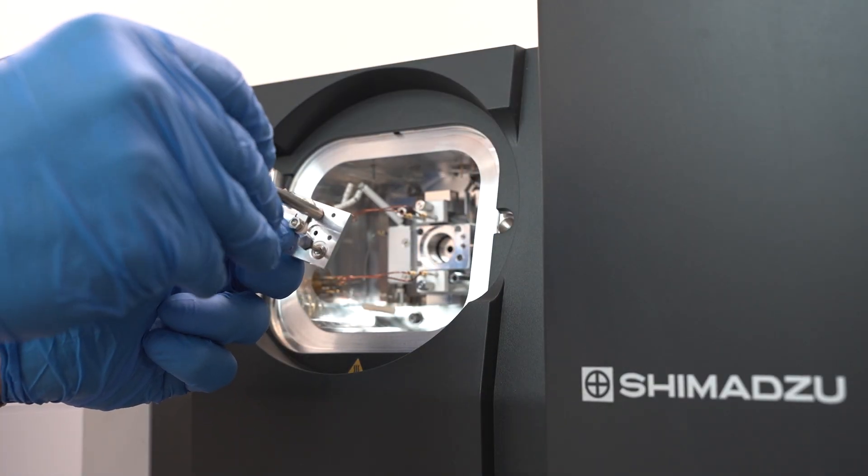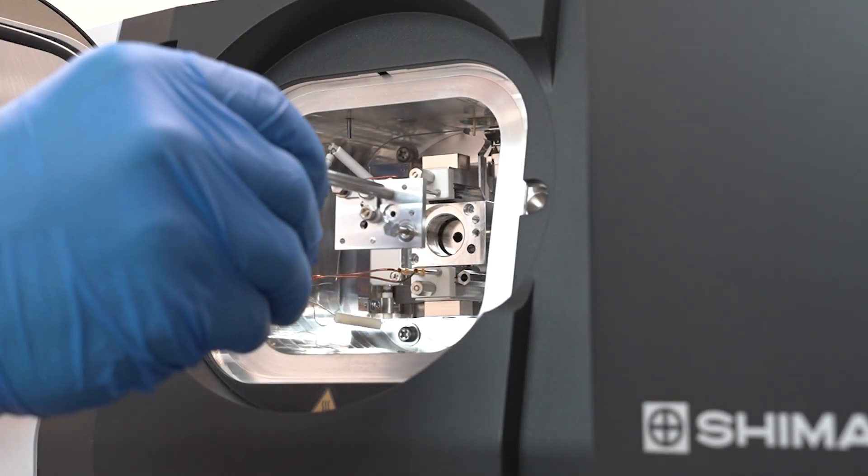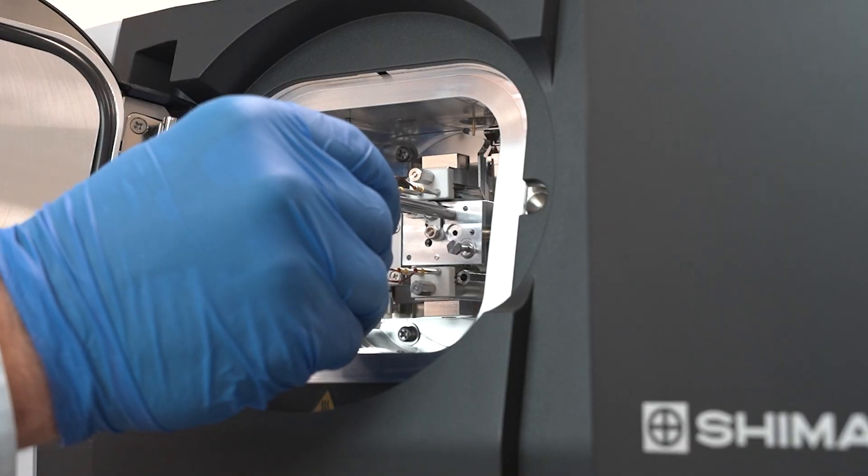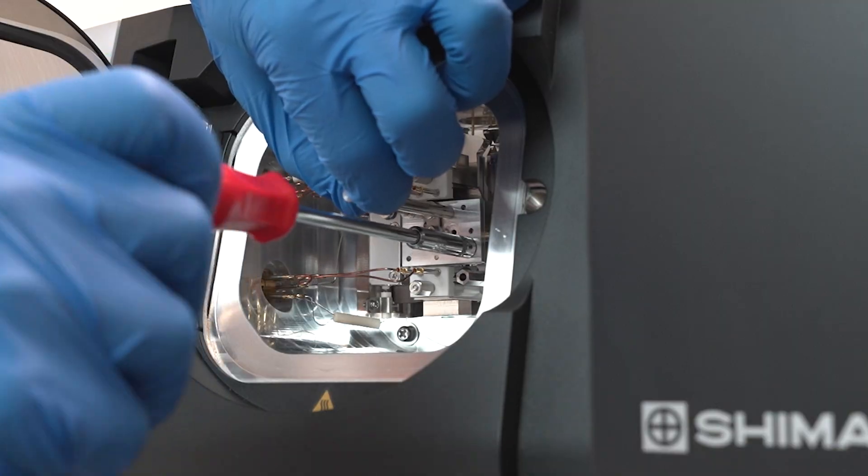Take the new or freshly cleaned ion source and secure the jig to it as before. Just as you removed it, place it directly back into the ion source slot and then tighten the two screws with the socket wrench.